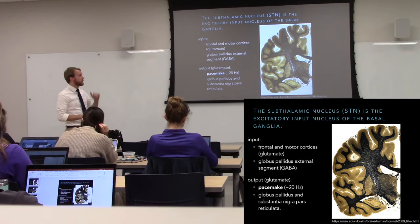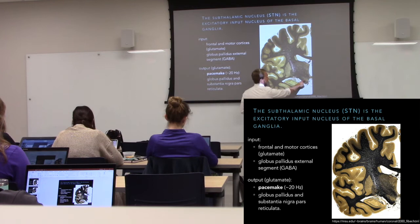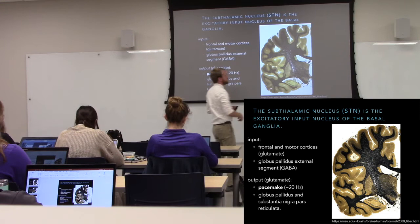Their targets are going to be the substantia nigra and the internal globus pallidus. So our basal ganglia are all right here just below the cortex. The STN is going to affect the output nuclei — GPI and SNR — as well as the external globus pallidus.